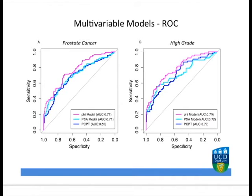And if we look at the performance of these same three models in the prediction of high-grade prostate cancer on the right-hand side, which is Gleason 7 or more, we can see a very similar result, which again shows a statistically significant improvement of the PHI model.